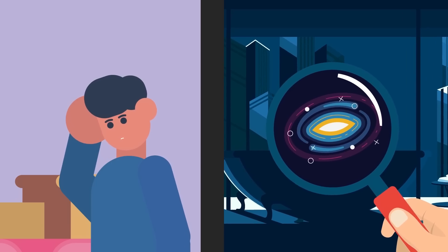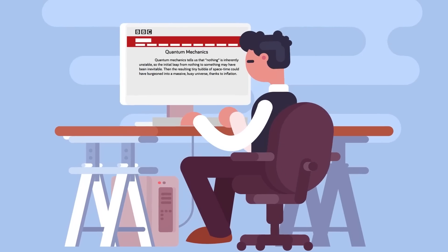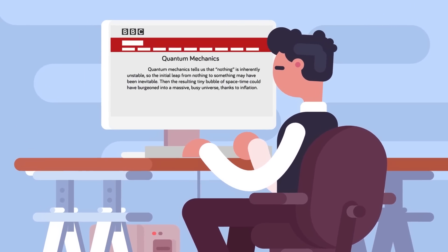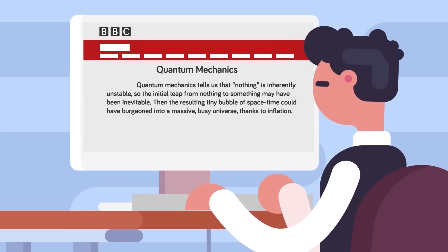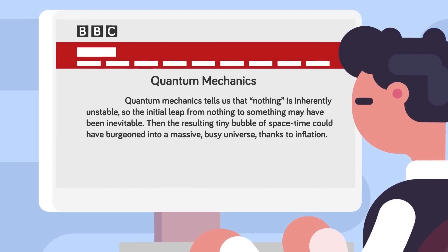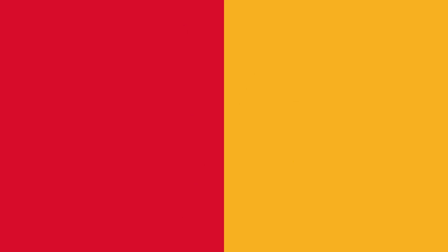By that rationale there can be a nothing, but with something. Scientists say nothing is unstable, and so we got something. That something is the universe. Bear with us, we know this is confusing. If we didn't explain it that well, this is what the BBC says about it. Quantum mechanics tells us that nothing is inherently unstable, so the initial leap from nothing to something may have been inevitable. Then the resulting tiny bubble of space-time could have burgeoned into a massive, busy universe thanks to inflation.